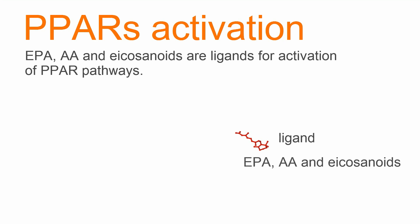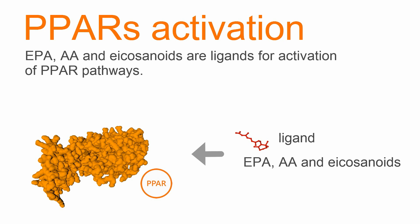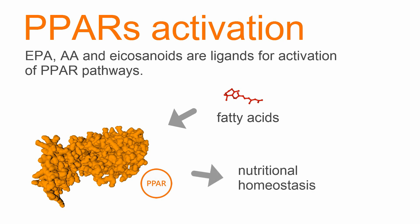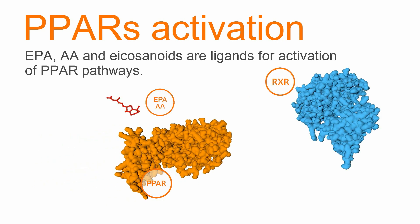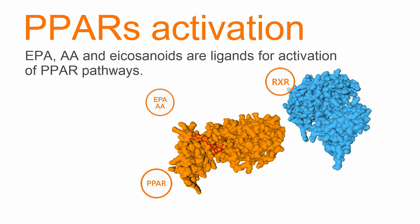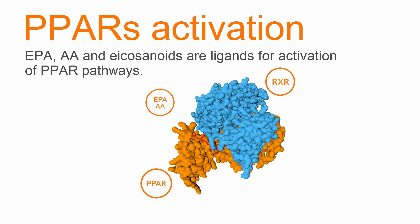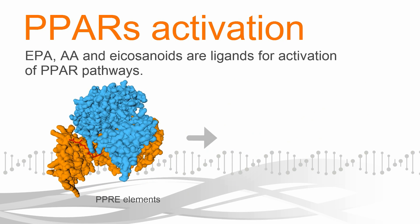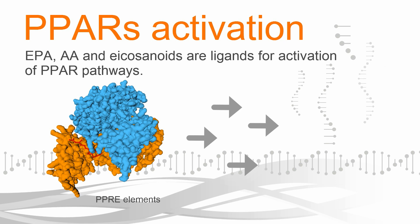EPA, AA, and their metabolites, the eicosanoids, act as endogenous ligands for PPARs. PPARs are a family of nuclear hormone receptors that serve as fatty acid sensors. They function to maintain nutritional homeostasis in our bodies. In a cell's nucleus, upon binding with a ligand, the PPAR protein will pair with the retinoid X receptor, RXR, a vitamin A receptor. Together, they recognize a specific DNA sequence called PPAR elements, then activate transcription of hundreds of genes to trigger an array of physiological functions.